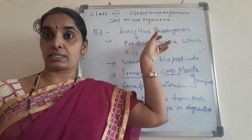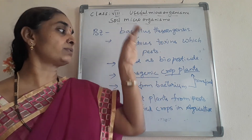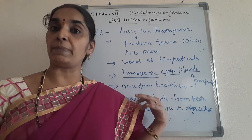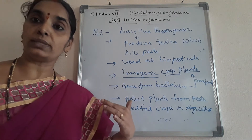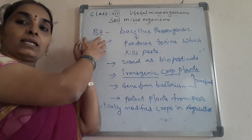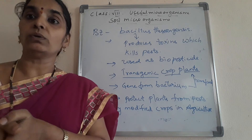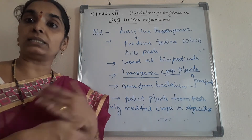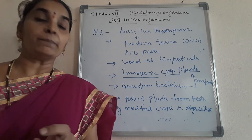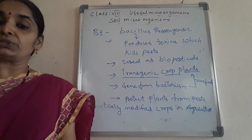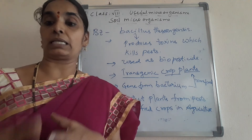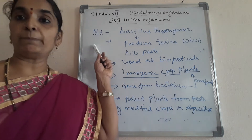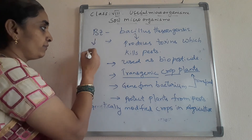The gene from Bacillus thuringiensis, which protects plants from pests, is taken and transferred into transgenic crop plants to get the best variety and to control pests. This way, farmers can grow insect-free crops of good variety in minimum time. A well-known example is BT cotton.